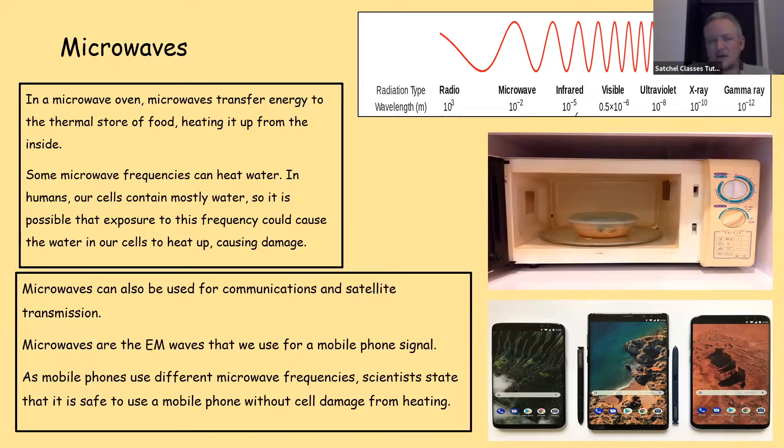On that note, microwaves can also be used for communications and satellite transmission. Microwaves are the electromagnetic waves that we use for mobile phone signals. As mobile phones use different microwave frequencies, scientists state that it is safe to use a mobile phone without cell damage from heating. They use different microwave frequencies from the microwave oven.